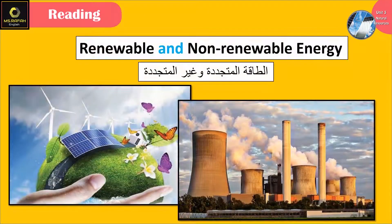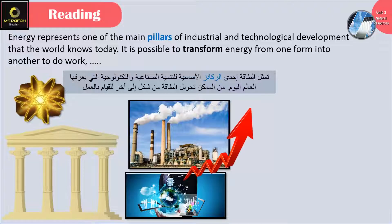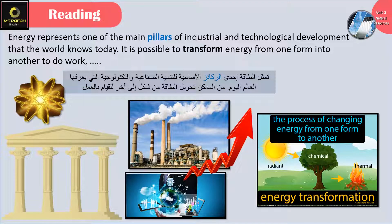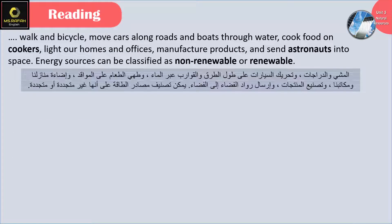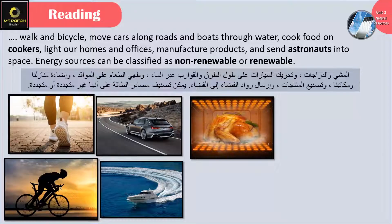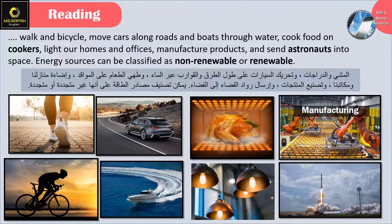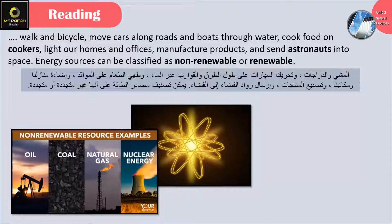Now let's move on to the lesson, renewable and non-renewable energy. Energy represents one of the main pillars of industrial and technological development that the world knows today. It is possible to transform energy from one form into another to do work. Walk and bicycle, move cars along roads and boats through water, cook food on cookers, light our homes and offices, manufacture products and send astronauts into space.